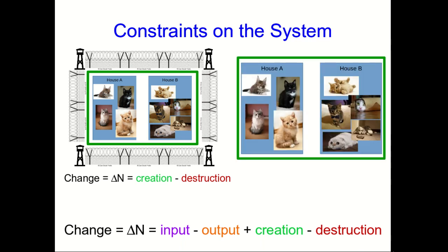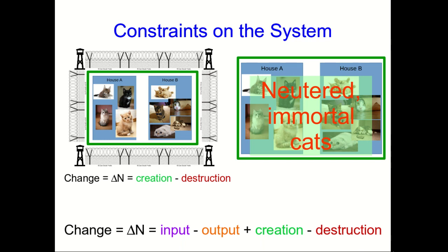Similarly, we could have a situation where maybe we have neutered immortal cats. Sure, why not? That could happen. So if that happened, now creation and destruction are impossible. And so our change in the number of cats in the houses would just be the input minus the output.